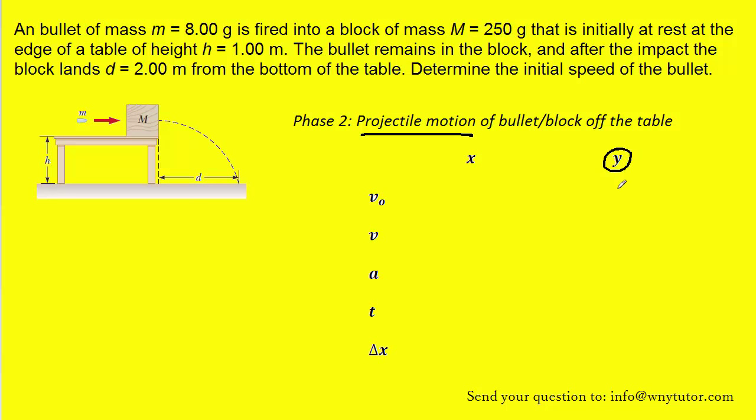Let's fill in the information for the y direction first. And to do that, we're going to note that the bullet and block, when they slide off the table, are only initially moving in the horizontal direction. The block and bullet are not moving up, nor are they moving down. So that means the initial velocity in the y direction will be zero. The acceleration in the y direction, of course, will be negative 9.8. And then the displacement in the y direction would be simply the height of the table. And that height was given to us as one meter. Note that because the objects are moving down vertically, that displacement will be a negative one.